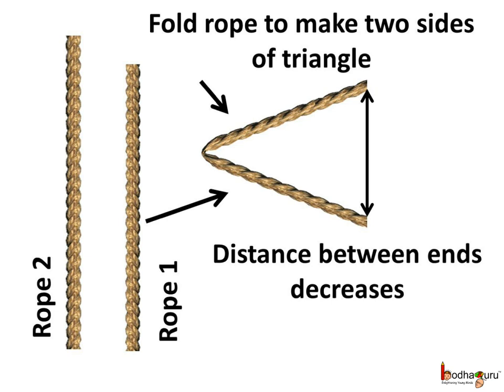Now we fold the shorter rope, that is rope 1, in an angle to make the two sides of a triangle. Look, as we folded the rope, the distance between its two ends has decreased. So that distance is lesser than the real length of the rope now.